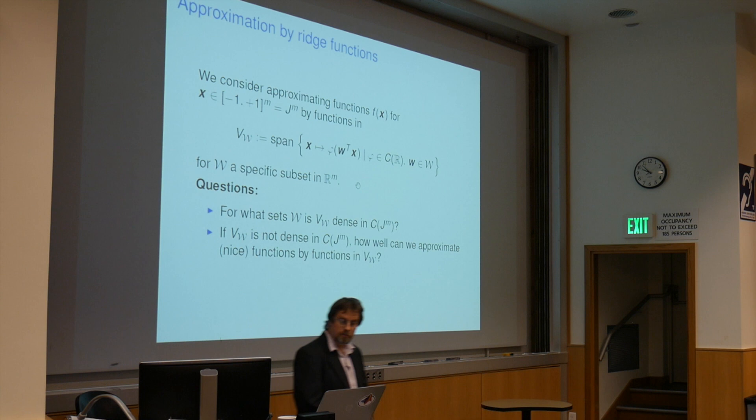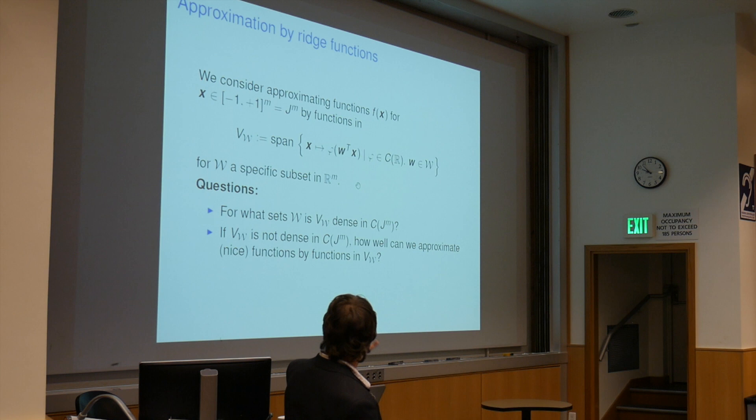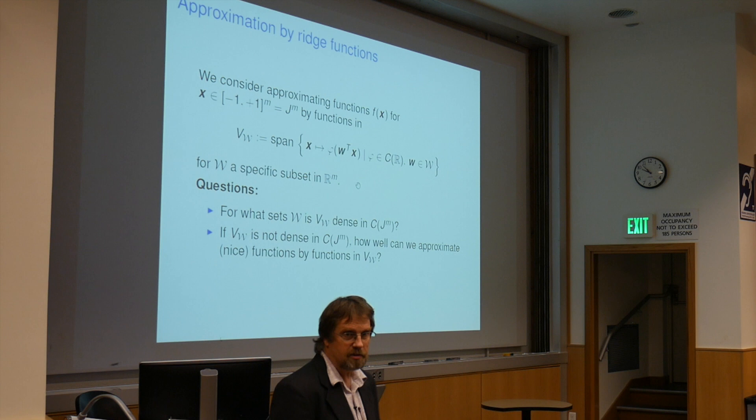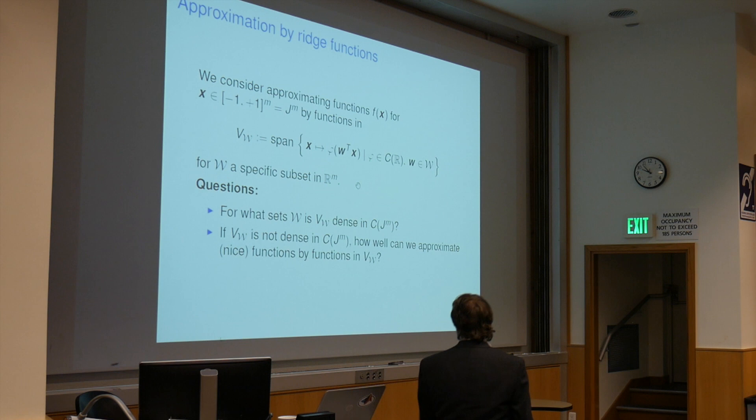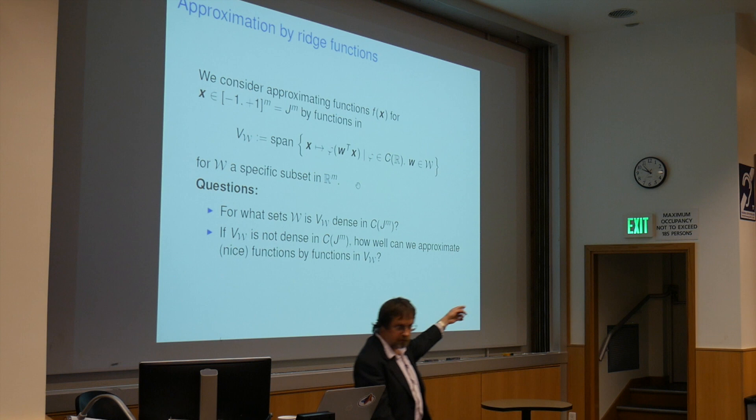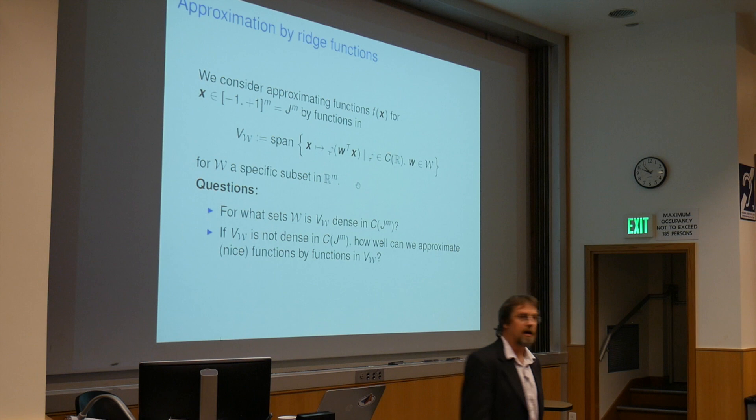Now the question is, the first question is: over what sets W is this V sub W, the span of the ridge functions, dense in the space of continuous functions? Second, if it's not dense, then how good are the approximations going to be? And there's an important point here that we have to pick nice functions, because otherwise functional analysis tells us that there are things that we really can't approximate.